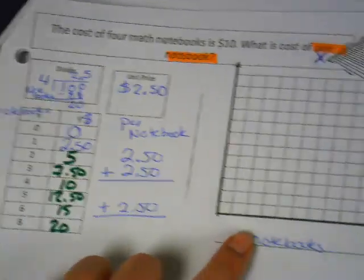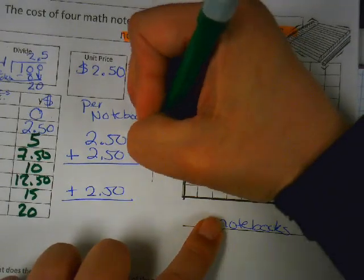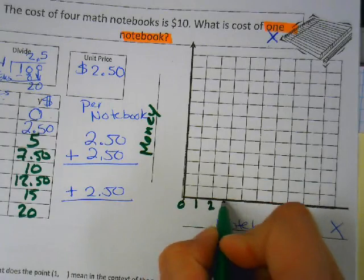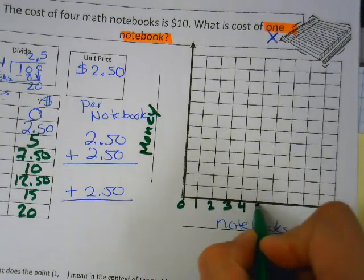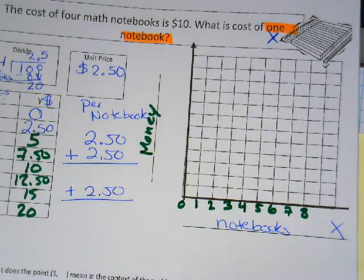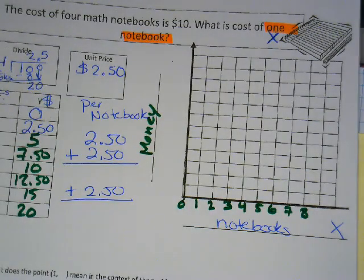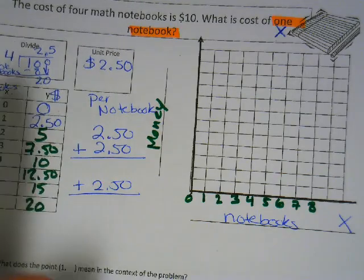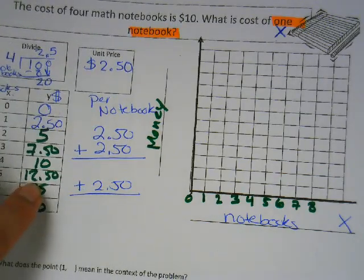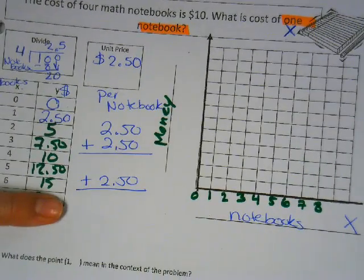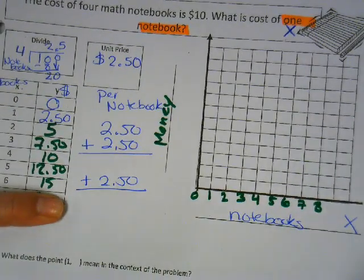All right. So this is notebooks, this is money. Right? On the notebooks we're going to go by one. One notebook, two notebooks, three notebooks, four, five, six, seven, eight. What am I going to go up on my Y? Two point five. And didn't we already do the work? Yep. So you're just literally going to copy these numbers, Daniela. Copy these numbers here, except for the last one, because we skipped. All right. So go ahead and fill this out.